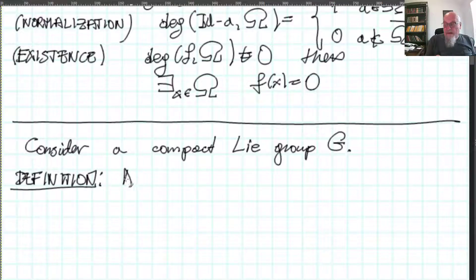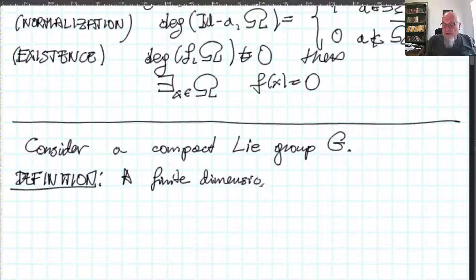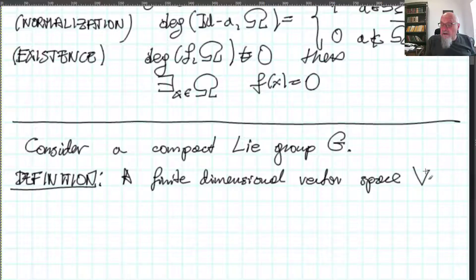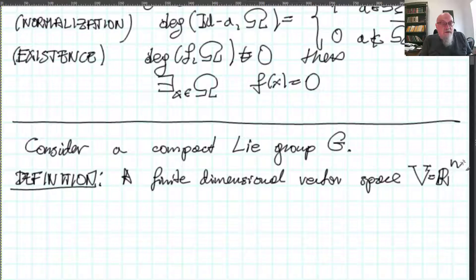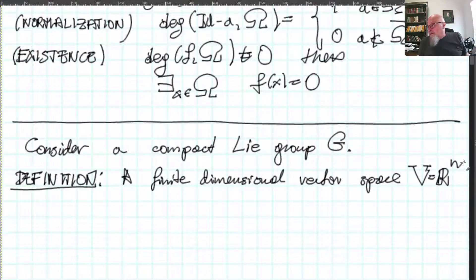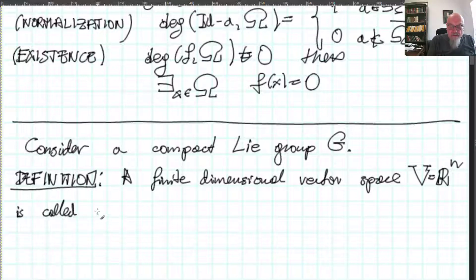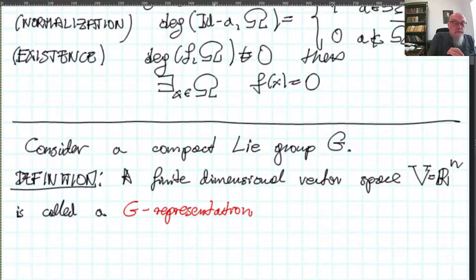We assume that V equals a certain finite-dimensional space; in this case it is a G-representation. We will be interested in representations of this particular group G. This is a good moment to introduce the definition — I didn't talk about representations yet. A finite-dimensional vector space V.